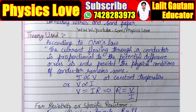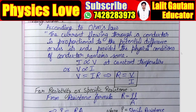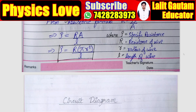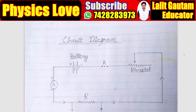Now theory. You can pause the video and write the practical in your practical file. Here we have explained Ohm's law and written the formula R = V/I. But in this experiment, we have to find out the resistivity. The formula of resistivity is ρ = R·π·r²/L. And you can also write this formula in terms of diameter — as you know, radius is half of diameter.